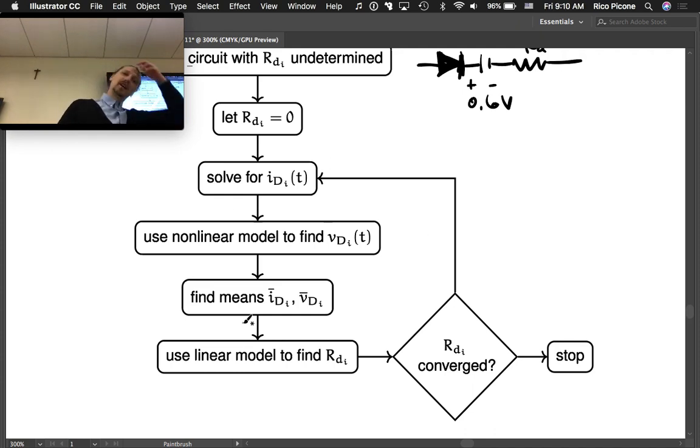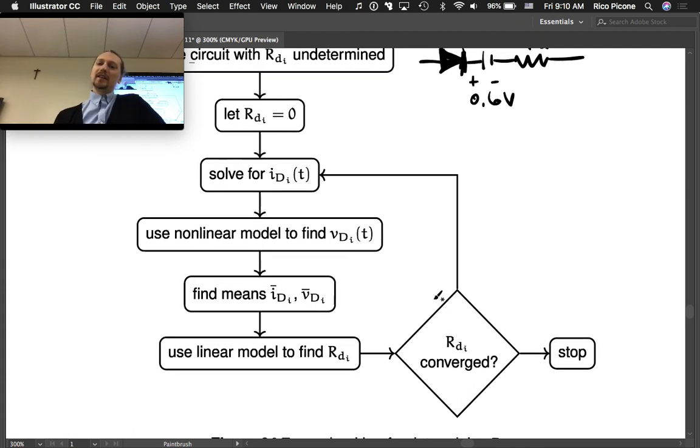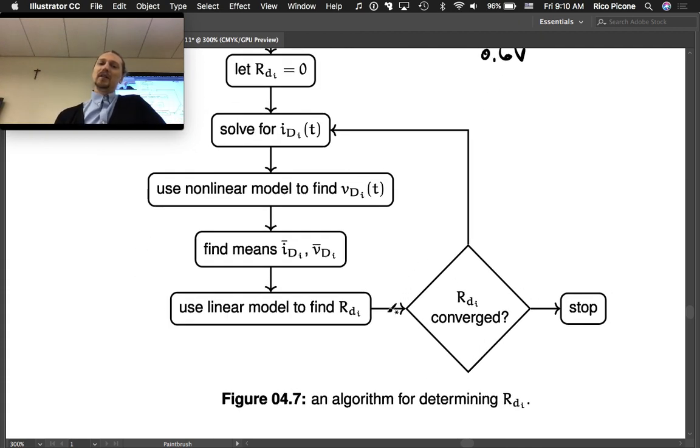This should converge. I haven't proven that, but I don't know of any cases when this doesn't converge. I think it will converge. It would be nice to have a proof, but I didn't have time to try to prove it. This does typically converge. Once you're, if Rdi has converged, the answer is yes, then stop iterating.